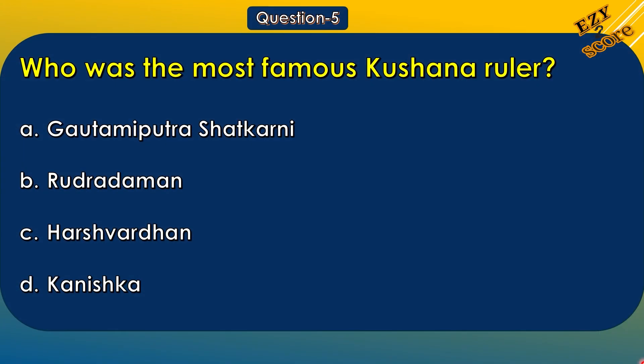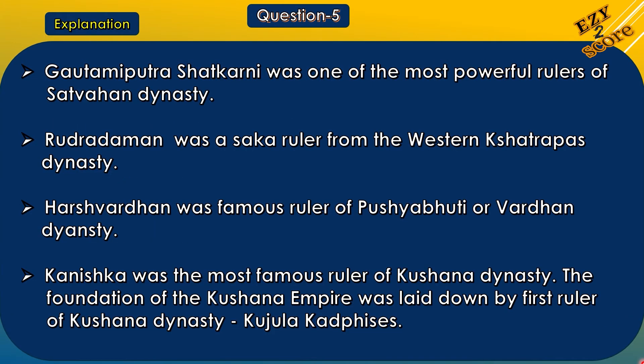Question 5: Who was the most famous Kushana ruler? Options: A. Gautami Putra Shatakarni, B. Rudradaman, C. Harshvardhan, D. Kanishka. The correct answer is option D, Kanishka. Gautami Putra Shatakarni was one of the most powerful rulers of the Satvahan dynasty. Rudradaman was a Shaka ruler from the Western Chhatrap dynasty. Harshvardhan was the famous ruler of the Pushyabhuti, or Vardhan, dynasty. Kanishka was the famous ruler of the Kushana dynasty. The foundation of the Kushana empire was laid down by the first ruler of the Kushana dynasty, Kuzul Kadhifishas.